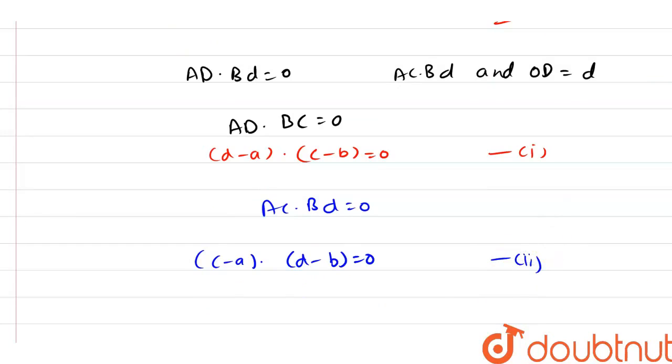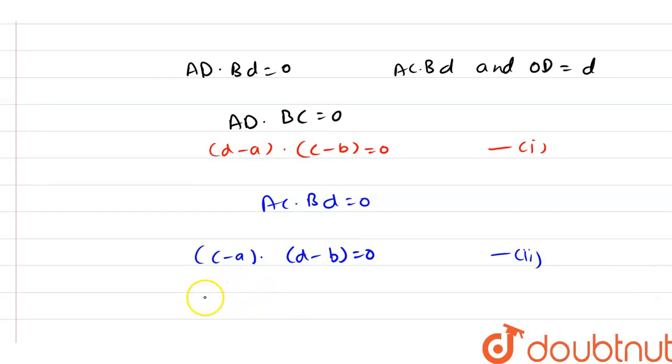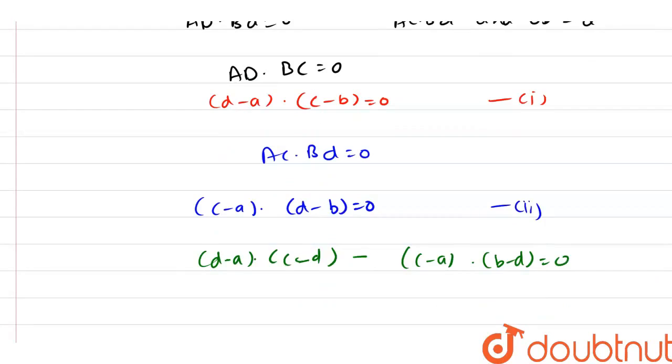After solving equation number 1 and 2, here we have D dot A, D minus A dot C minus D minus C minus A dot D minus B, A dot B, and this whole value is equal to 0.